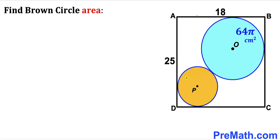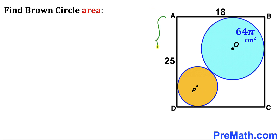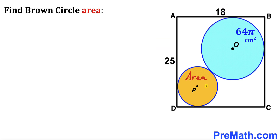Welcome to pre-math. In this video we have these two circles — the brown circle and the blue circle — fully inscribed in a rectangle ABCD, such that the area of the blue circle is 64π cm². The center of the blue circle is O and the center of the brown circle is P. The length of the rectangle is 25 cm and the width is 18 cm. Our task is to calculate the area of the brown shaded circle.